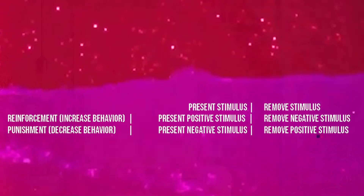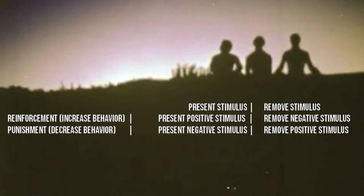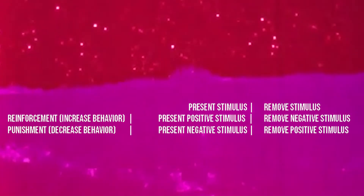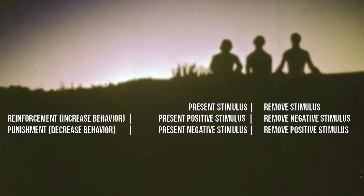In this grid, you can see if we would like to increase certain behavior, we can either present positive stimulus or remove negative stimulus. If we would like to decrease certain behavior, we can either present negative stimulus or remove positive stimulus.